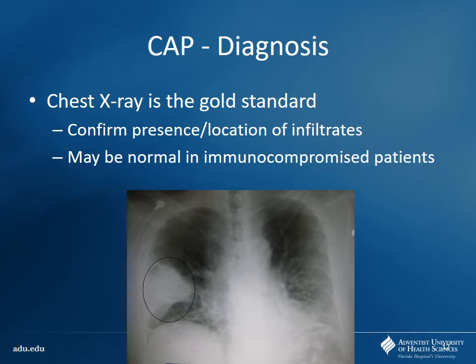Keep in mind the chest X-ray can be misleading - patients with poor immune systems may not mount enough inflammation to show the typical white-out appearance, so the X-ray may appear normal. That's one caveat to consider when evaluating immunocompromised patients with suspected pneumonia.